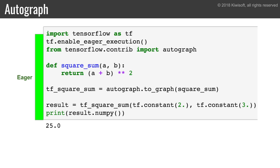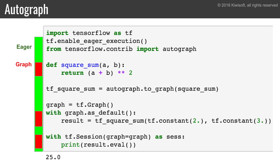Another easy way to create a graph is using the new Autograph module. First, you simply write a regular Python function. In this example, the SquareSum function just computes the square of the sum of A and B. Then you call the ToGraph function to convert it to a TensorFlow function, in this case called TFSquareSum. This function can then be used both in eager mode and in graph mode using tensors. Right now we're calling it in eager mode, so it runs in eager mode. But now we create a graph, and within the with block, we call the TFSquareSum function, so it runs in graph mode. It just creates the operations required to perform the computations and adds them to the graph — it does not actually run them yet.